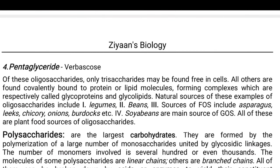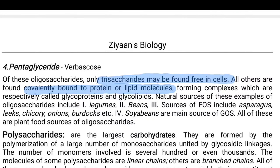The last one is the pentasaccharide — five monosaccharide units in a chain-like fashion — called verbascose. Of these total oligosaccharides, only trisaccharides may be found free in cells. All others are found covalently bound to proteins or lipids. If bound to protein, they are called glycoproteins; if bound to lipid, they are called glycolipids.